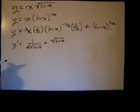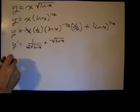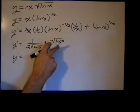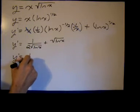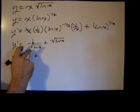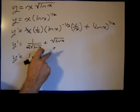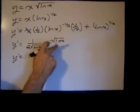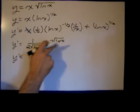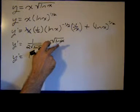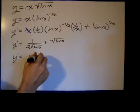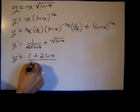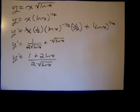And if I wanted to be fancy, I could get a common denominator, and I don't know, I feel like it. So I get y prime, I need a 2 ln of x over here. So I'll get 1 plus 2 square roots of ln of x. I need a 2 square root of ln of x in the denominator here. So when I multiply 2 square roots of ln of x times the square root of ln of x, I get 2 times the ln of x divided by 2 square roots of the ln of x.